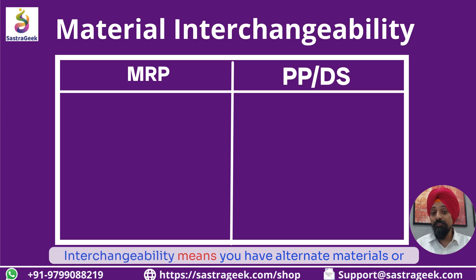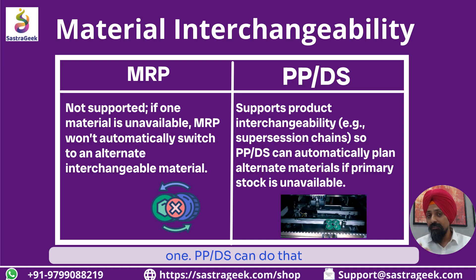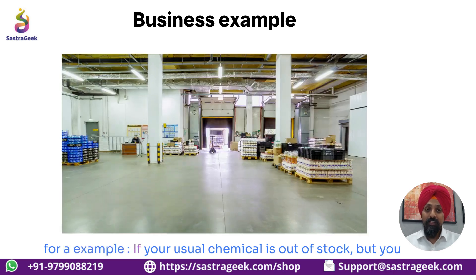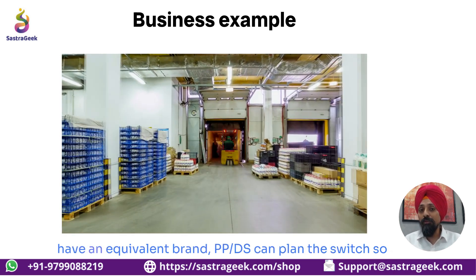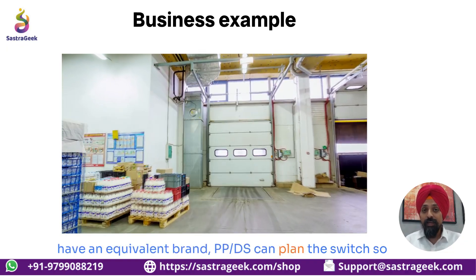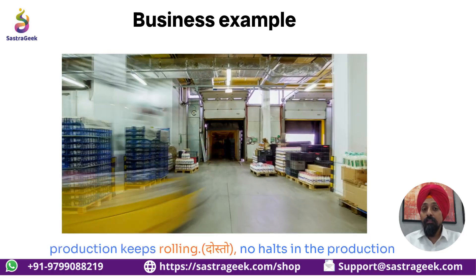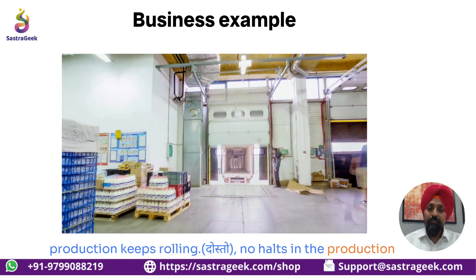Interchangeability means you have alternate materials or parts. MRP doesn't automatically swap them if you run out of one. PPDS can do that. For example, if your usual chemical is out of stock but you have an equivalent brand, PPDS can plan the switch so production keeps rolling — no halts in the production line.